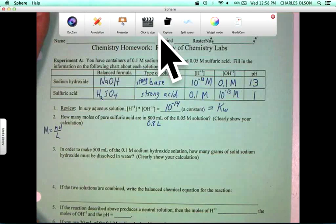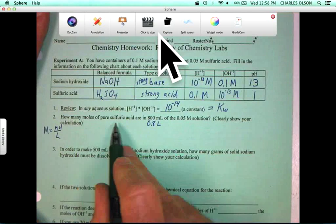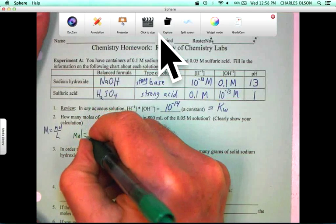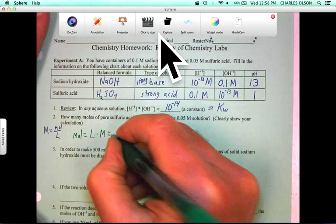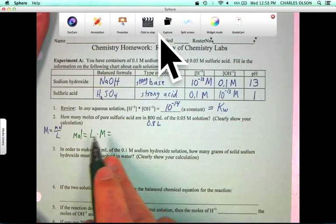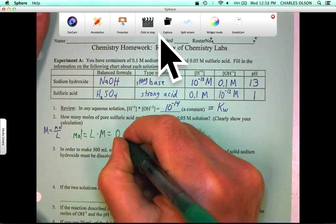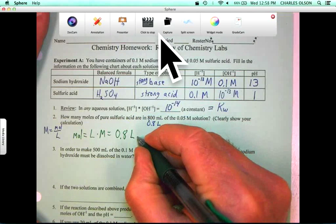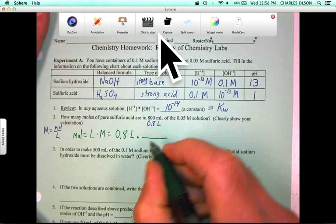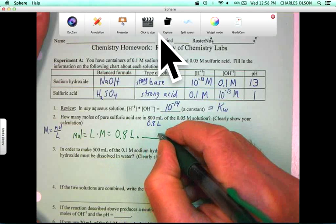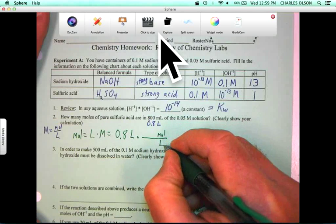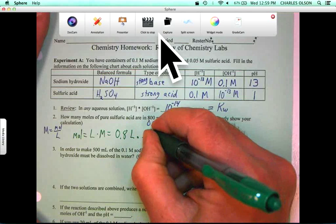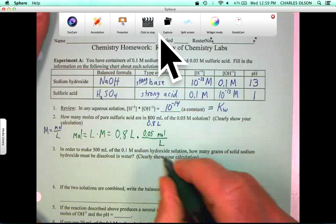We know that molarity equals moles over liters. So starting a new equation, we are asked the number of moles. So we rearrange our equation. Moles equals liters times molarity equals, what are our liters? 0.8 liters times the molarity. Now, here I am going to write that as moles per liter, and our molarity is 0.05 molar, so 0.05 moles per one liter.